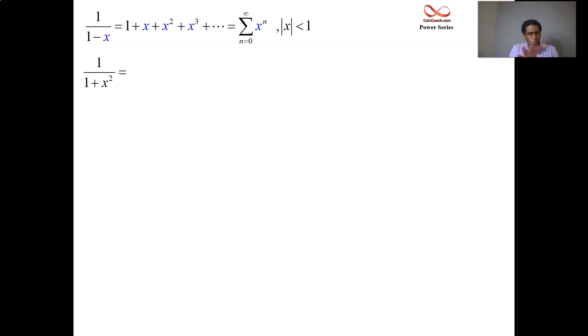So we're going to alter the 1 over 1 minus x algebraically by looking at it and seeing what the difference is between what we have and what we want. We have 1 on top, we have 1 on the bottom, and we have a plus sign where there should be a minus.